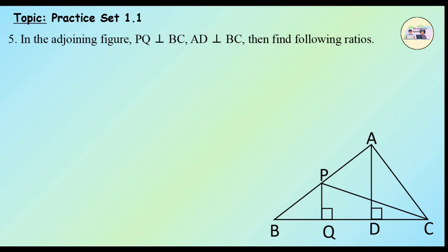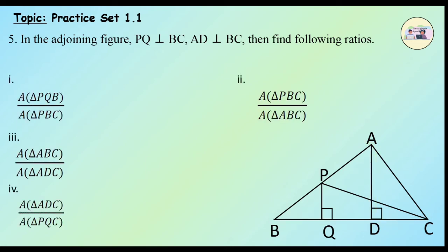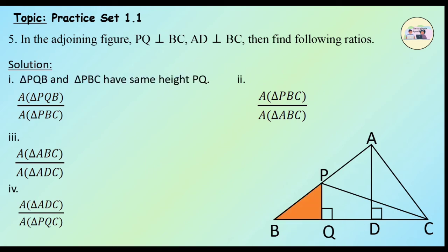Question 5. In the adjoining figure, PQ is perpendicular to BC, AD is perpendicular to BC. Find the following ratios. First: find area of triangle PQB upon area of triangle PBC. Triangle PQB and triangle PBC have the same height PQ. Therefore, the ratio of areas equals the ratio of their corresponding bases. So, area of triangle PQB upon area of triangle PBC = BQ upon BC.